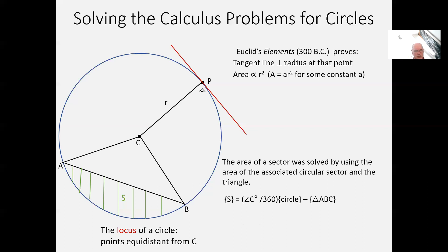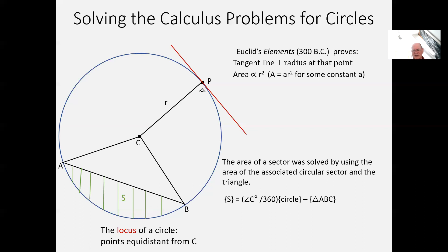To save real estate on the PowerPoint page, I'm using round brackets to express the area of whatever geometric object is inside. The area of the segment is this percentage of the circle — the angle C divided by 360 — times the area of the circle, minus the area of the triangle ABC. So the problem of tangents and areas was completely solved for the circle in Euclid's Elements back in 300 BC. A good start for the iconic curved figure — if you're talking about curves, you begin with the circle.